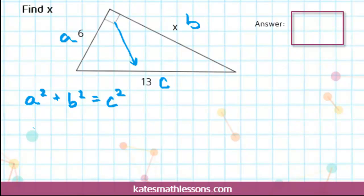Once you have them labeled, you just plug them into the theorem. So A squared would be 6 squared, B squared would be X squared, and C squared is 13 squared.